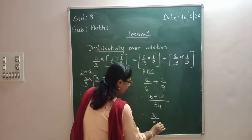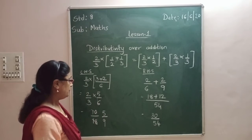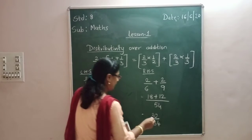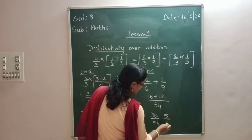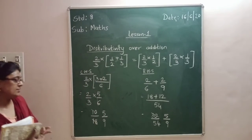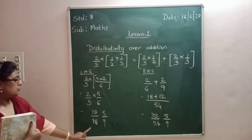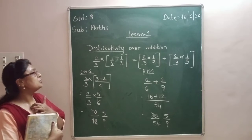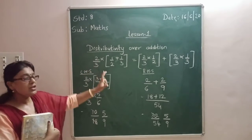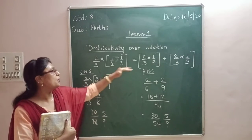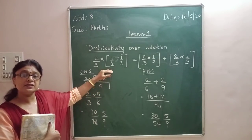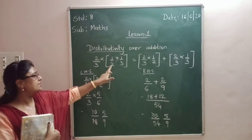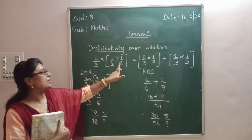So that gives me 30/54. If I cancel it — 6 times 5 is 30, and 6 times 9 is 54 — so I get the answer as 5/9. This proves that LHS is equal to RHS. So distributivity over addition means when you are stuck while solving sums, you apply this distribution: 2/3 gets multiplied with each term, with a plus sign in between.